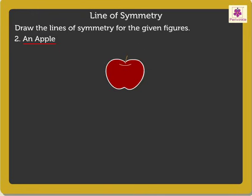Figure 2: An Apple. We cannot divide an apple into two equal halves. Thus, an apple has no line of symmetry.